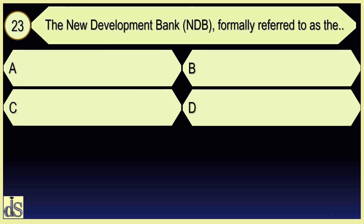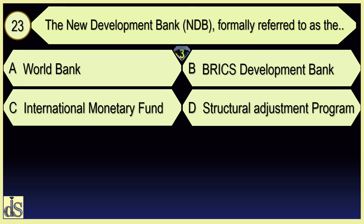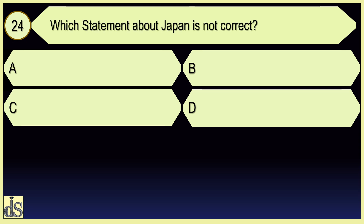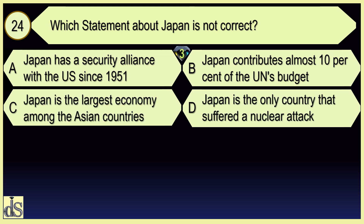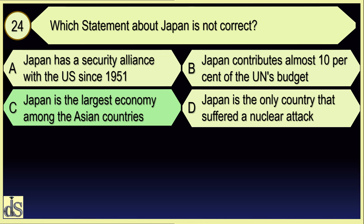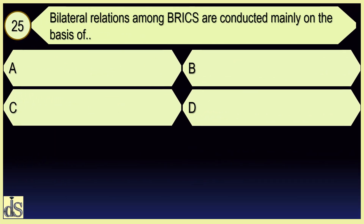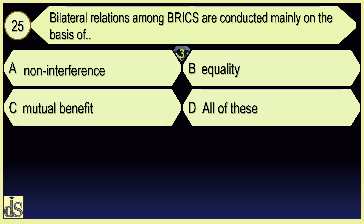The New Development Bank, formally referred to as the BRICS Development Bank. Which statement about Japan is not correct? Japan is the largest economy among the Asian countries. Bilateral relations among BRICS are conducted mainly on the basis of all of these.